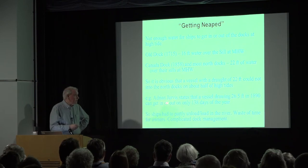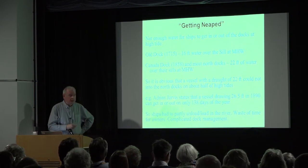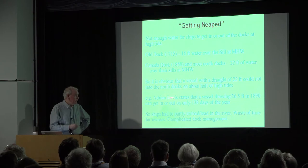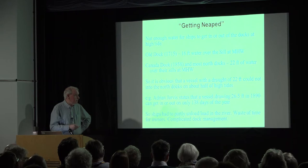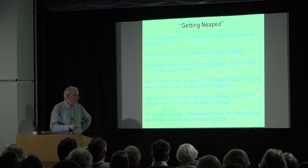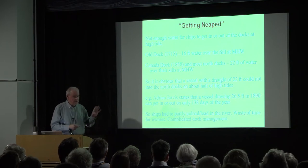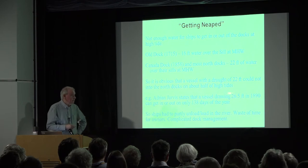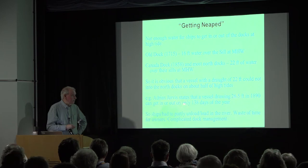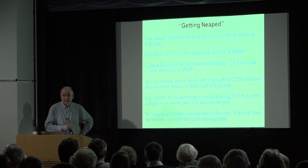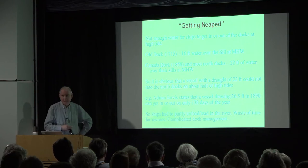I'd advise you to read the books by Adrian Jarvis, who knows far more than anybody about Liverpool docks. He gives the example of a vessel drawing 26 and a half feet in 1890 — a big ship for that era — which could only get in and out of any dock in Liverpool on 138 days of the year. That's a very big disadvantage for Liverpool.